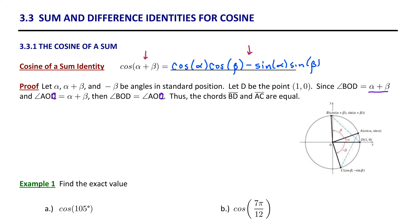As we have learned, we can use the cosine and sine functions to identify the coordinates of a point. Point A, associated with angle alpha, has x-coordinate cosine alpha and y-coordinate sine alpha. Similarly, angle alpha plus beta has x-coordinate cosine(α+β) and y-coordinate sine(α+β). Point C, associated with angle negative beta, has coordinates cosine(−β) and sine(−β). Applying our even and odd identities, since cosine is even, cosine(−β) simplifies to cosine β, and sine(−β) simplifies to negative sine β.